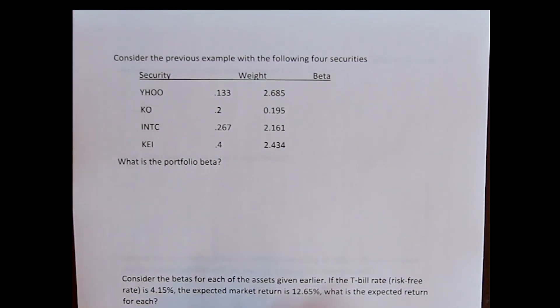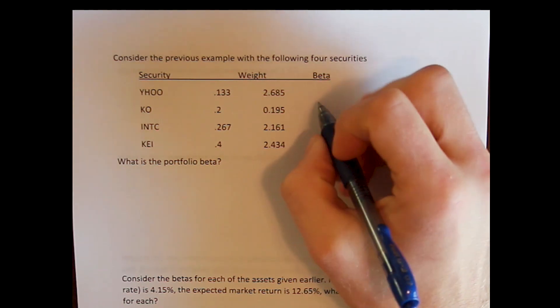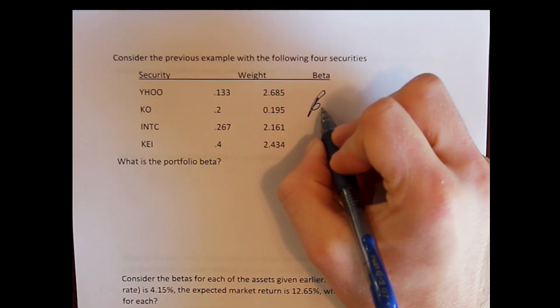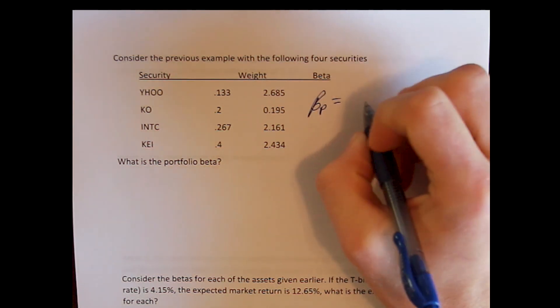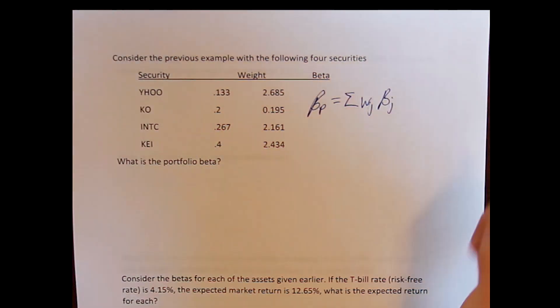The portfolio beta has a couple of ways we can calculate it, but the easiest one is that the beta of the portfolio is the weighted average of the beta of the assets.